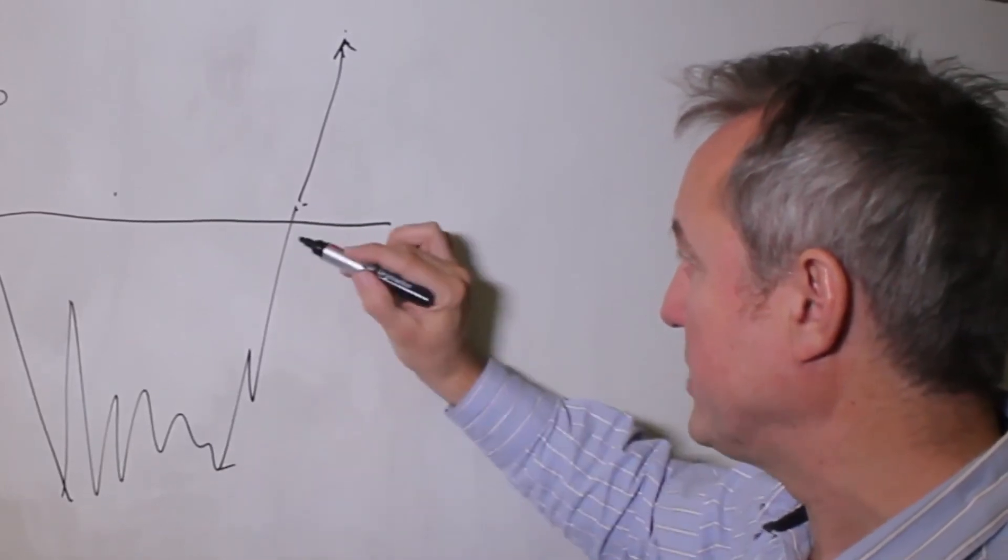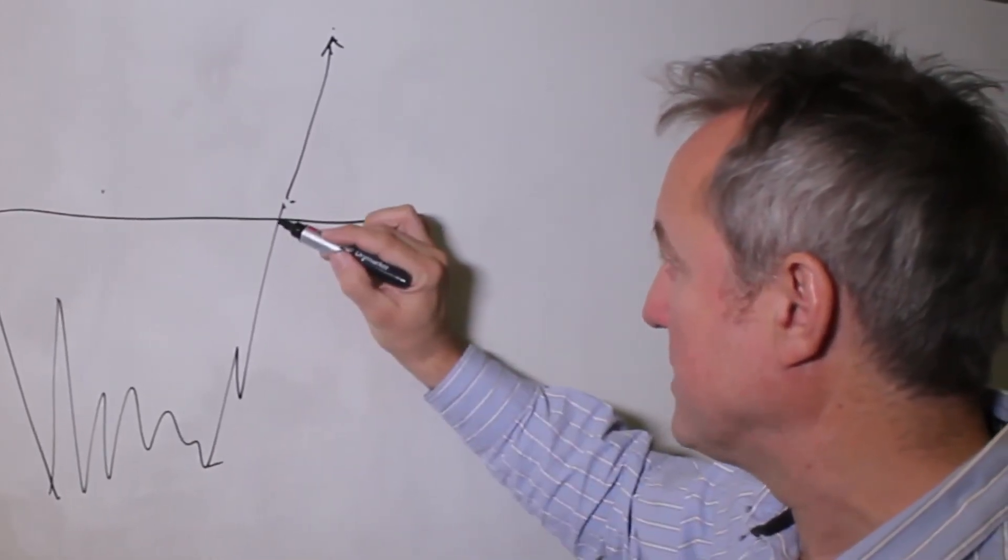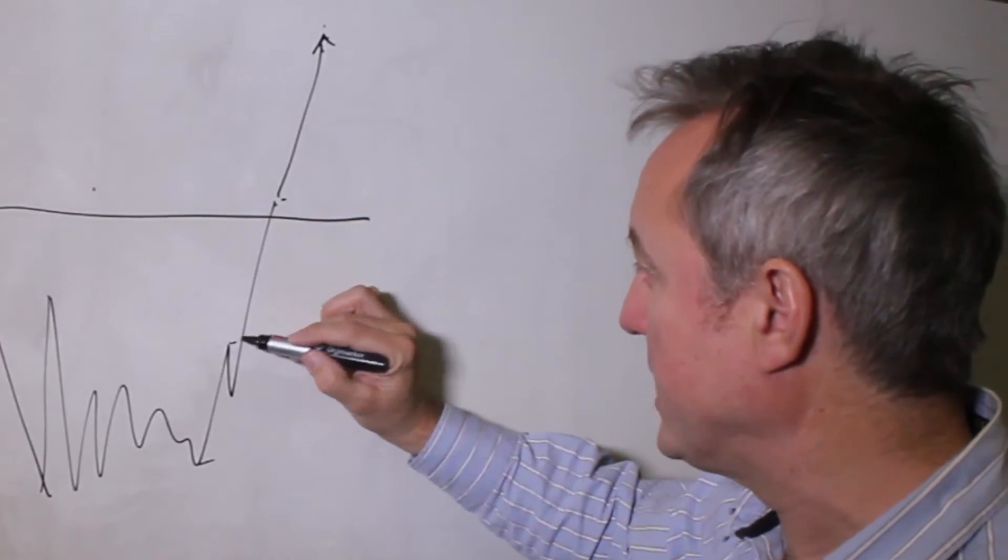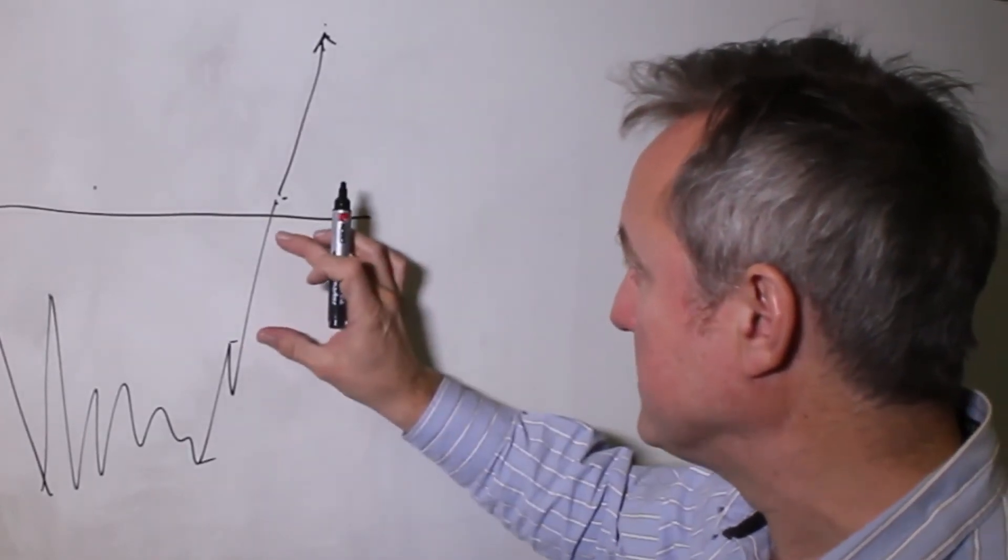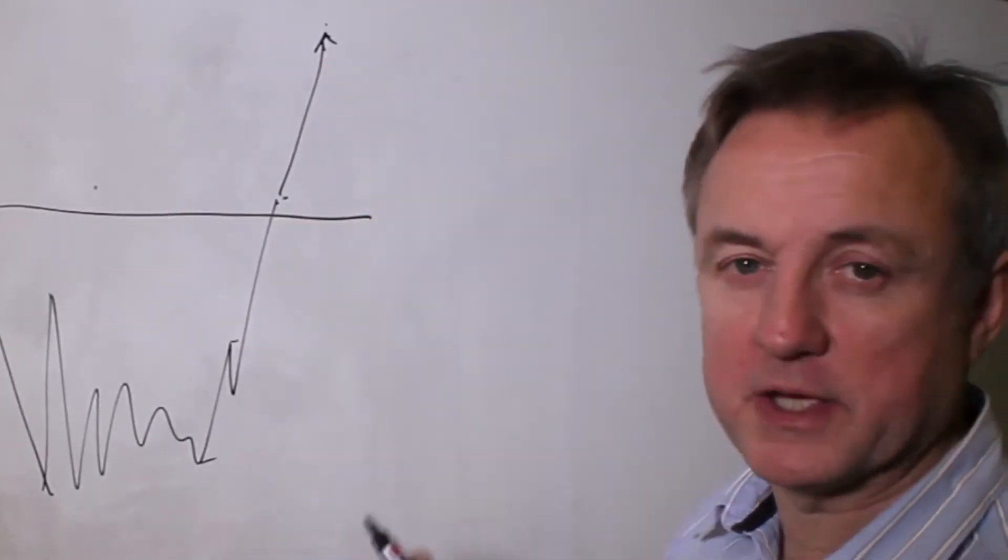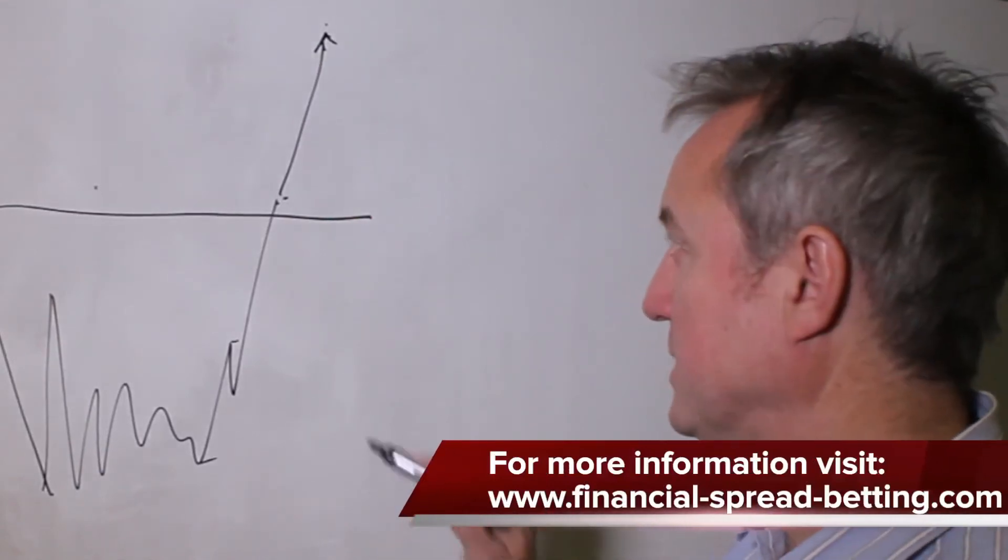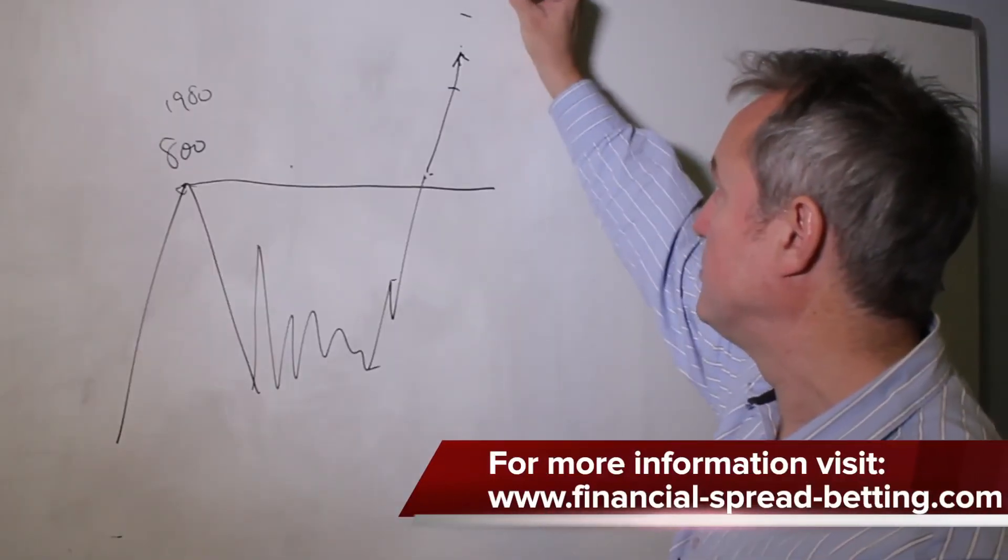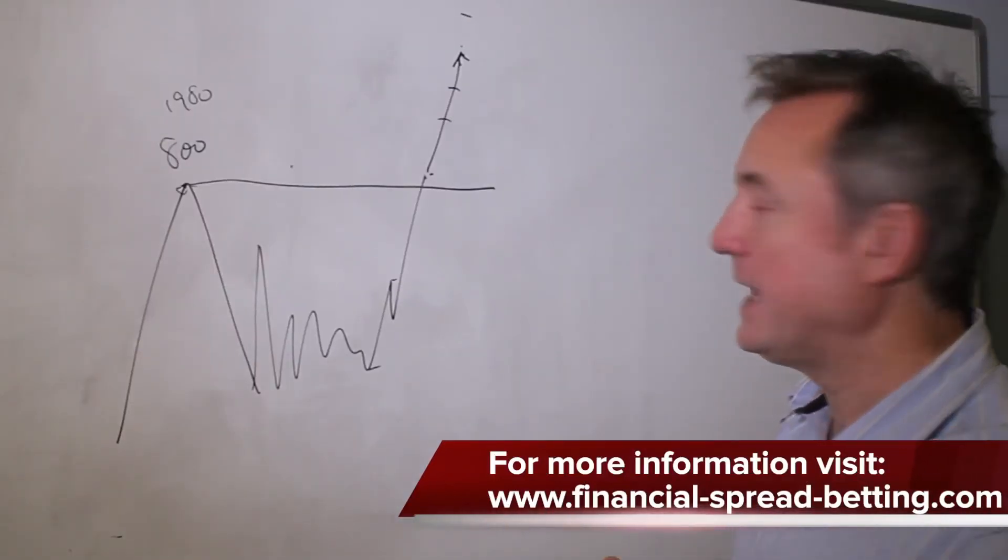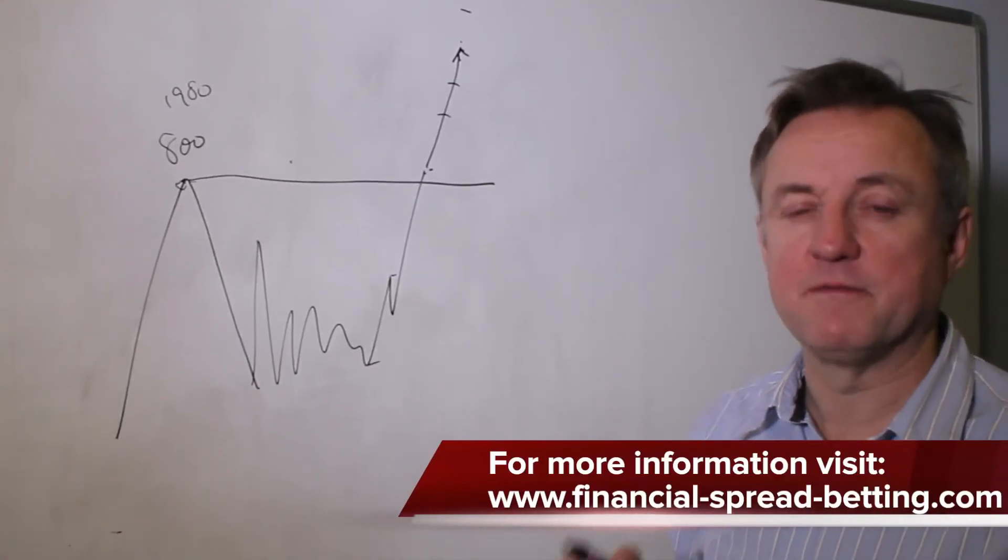I think Fibonacci extension ratios, for example of the preceding trend and the multiples of that preceding trend, can create Fibonacci multiples of that preceding trend. These can create resistance and support levels in totally uncharted territory, and that's Fibonacci extensions.